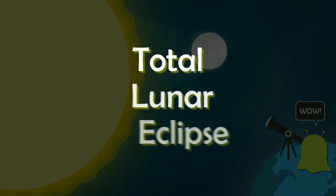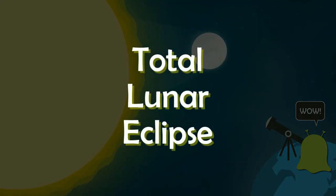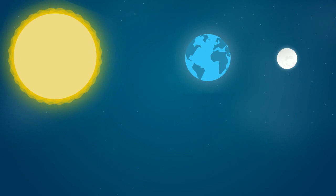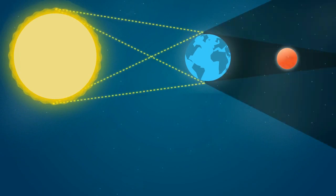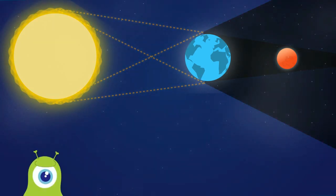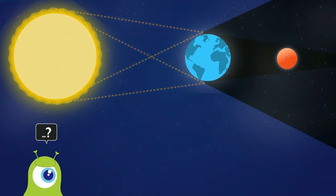As we all know, during a total lunar eclipse, Earth comes in between the moon and the sun. In this position, our Earth casts its shadow on the moon. But wait — if the moon is completely within the shadow of the Earth and no light from the sun can reach towards it, it should be invisible.